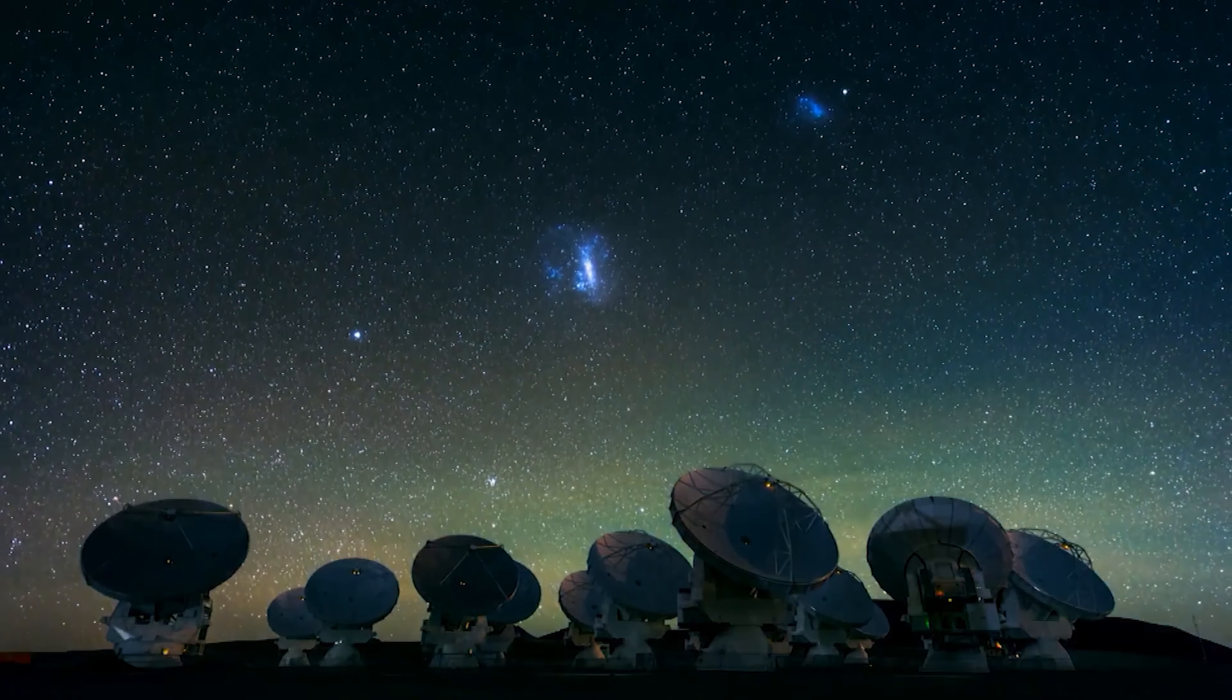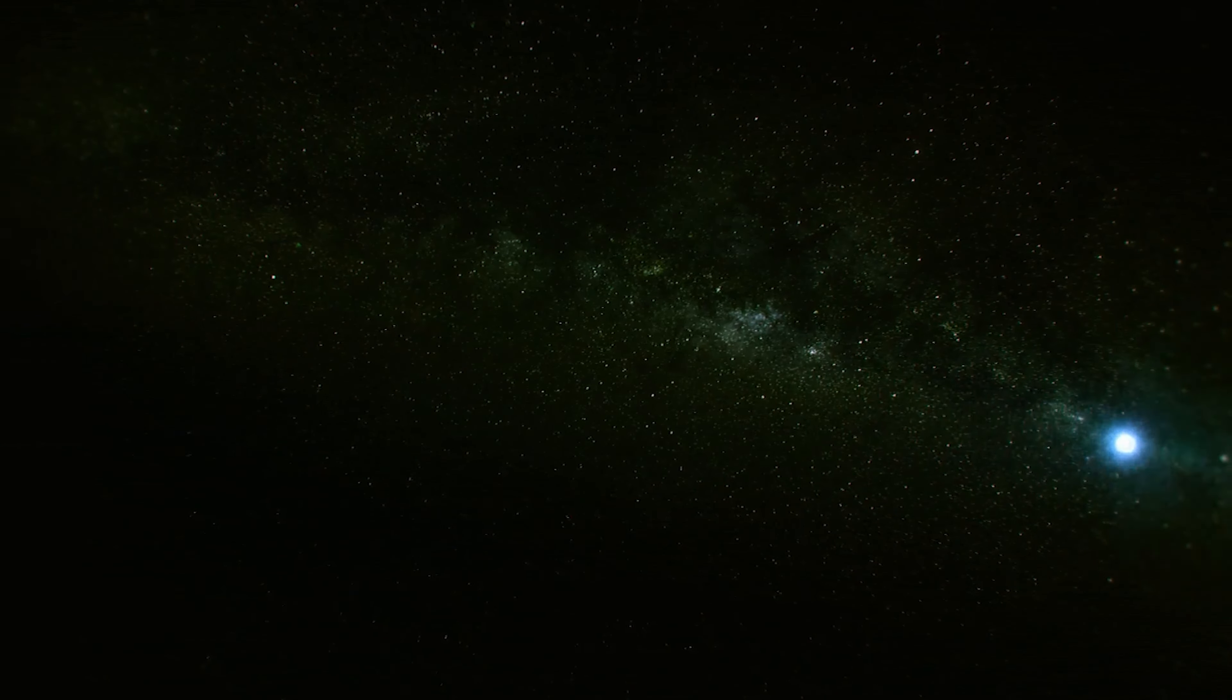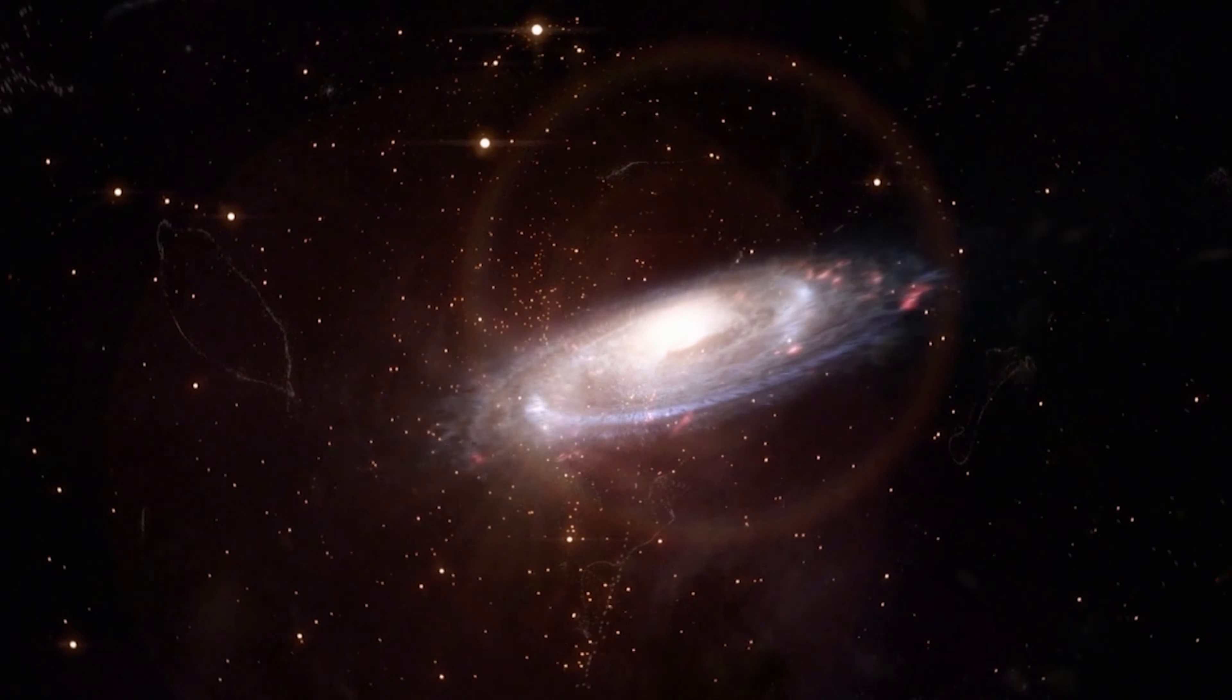In 2017, astronomers noticed a strange object and numbered it LP-40365. What was strange was, first, that it was hurtling through space out of our galaxy at breakneck speed.